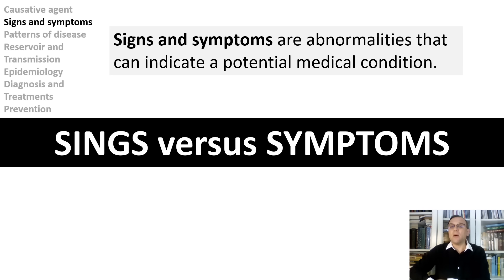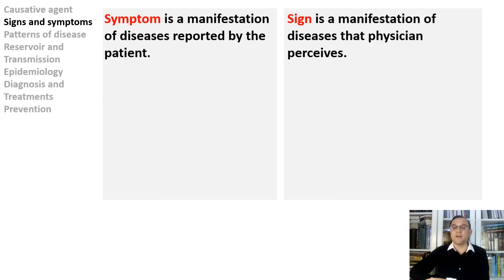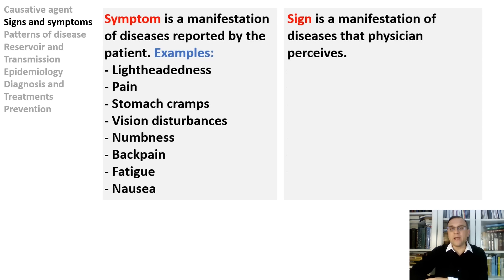I want you now to understand the differences between signs and symptoms. Signs and symptoms are abnormalities that can indicate a potential medical condition. A symptom is a manifestation of disease apparent to the patient himself — symptoms represent the complaints of the patient. For example, lightheadedness can only ever be a symptom because no one else can observe it. Same with any pain — sinus pain, chest or back pain — these are symptoms. Stomach cramps, vision disturbances including double vision, blurred vision, eye flashes, fatigue, and numbness are all symptoms that can only be recognized by the person experiencing them.